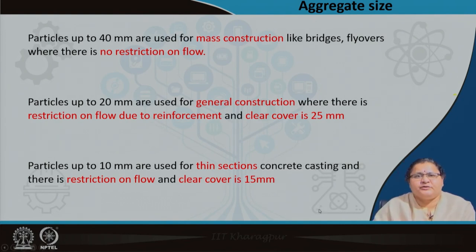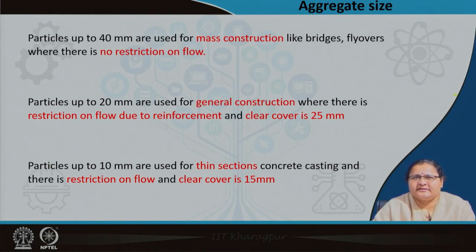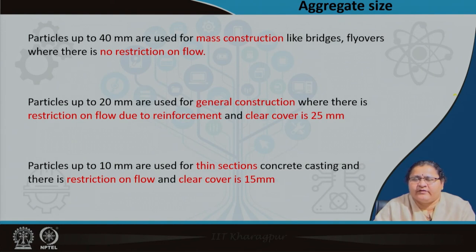Particles up to 10 millimeter are also coarse aggregates — where are they used? Thin sections, thin castings, very thin shells, and not-so-heavy beams. Where the clear cover is around 15 millimeter, such structures will require low particle sizes. For ferro cement, where concrete has to move through mesh or chicken wire mesh, you will have to go for very small size stone chips. So the significance of aggregate size is clear.